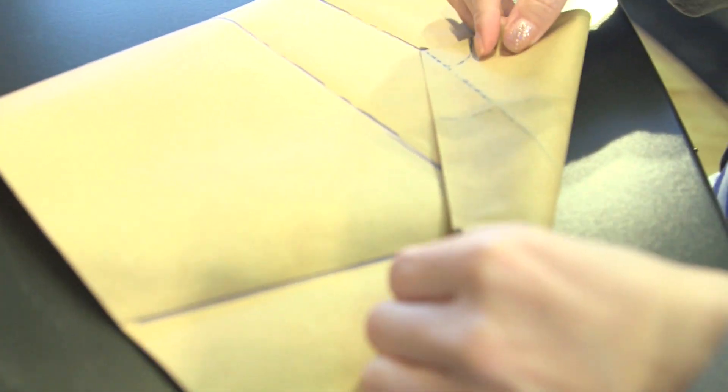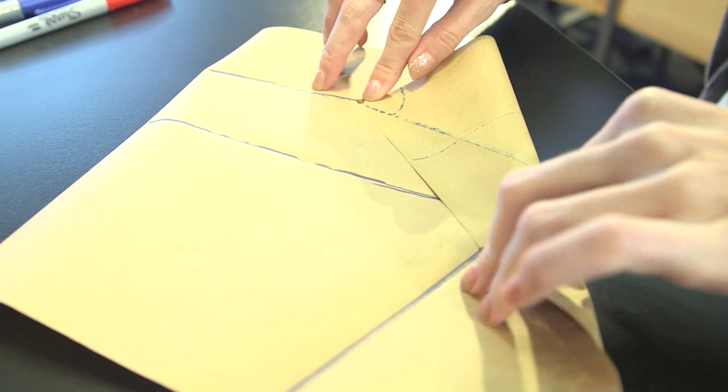So I'm going to fold it and fiddle it around. Now, once I found that alignment, I'm going to put my hand down and crease the line.